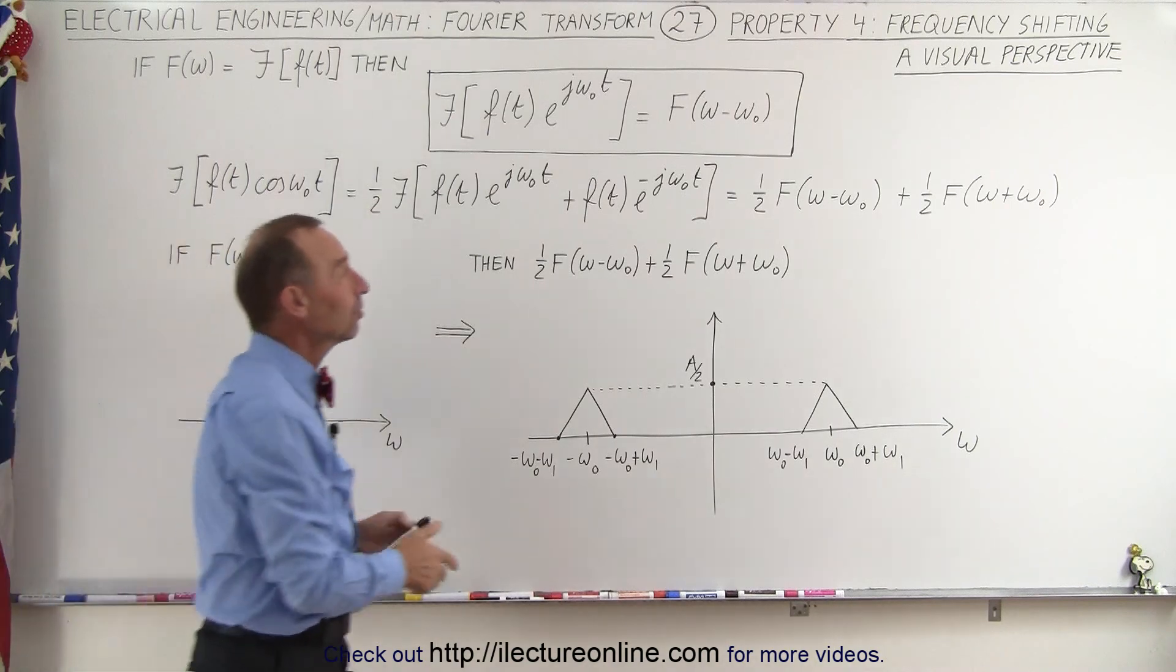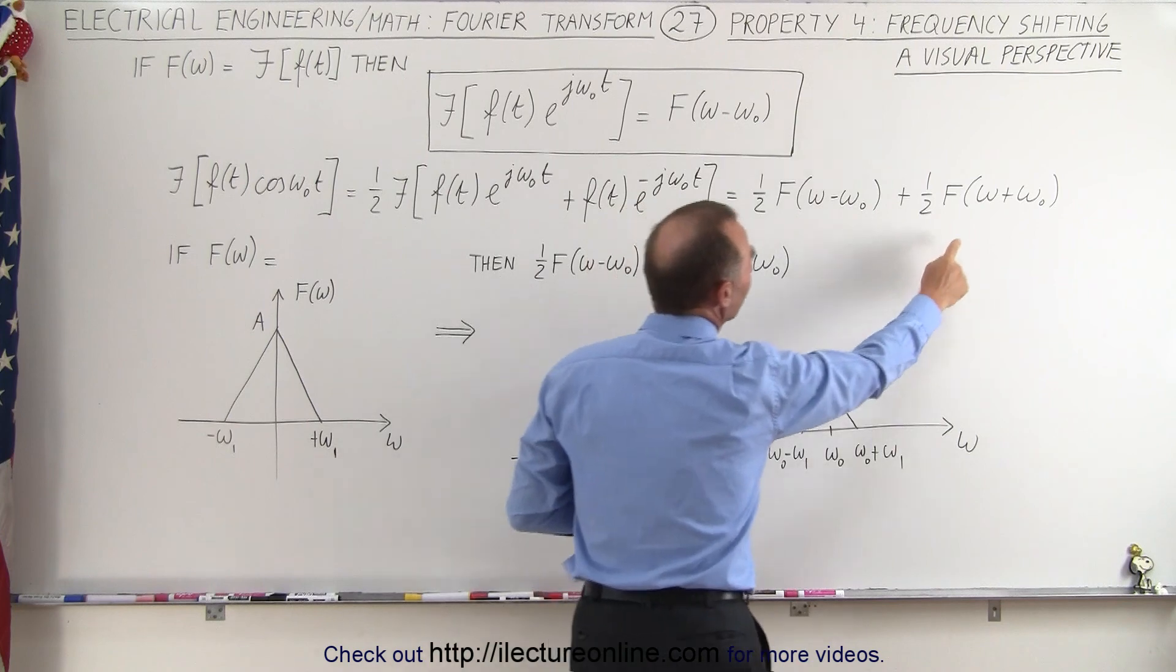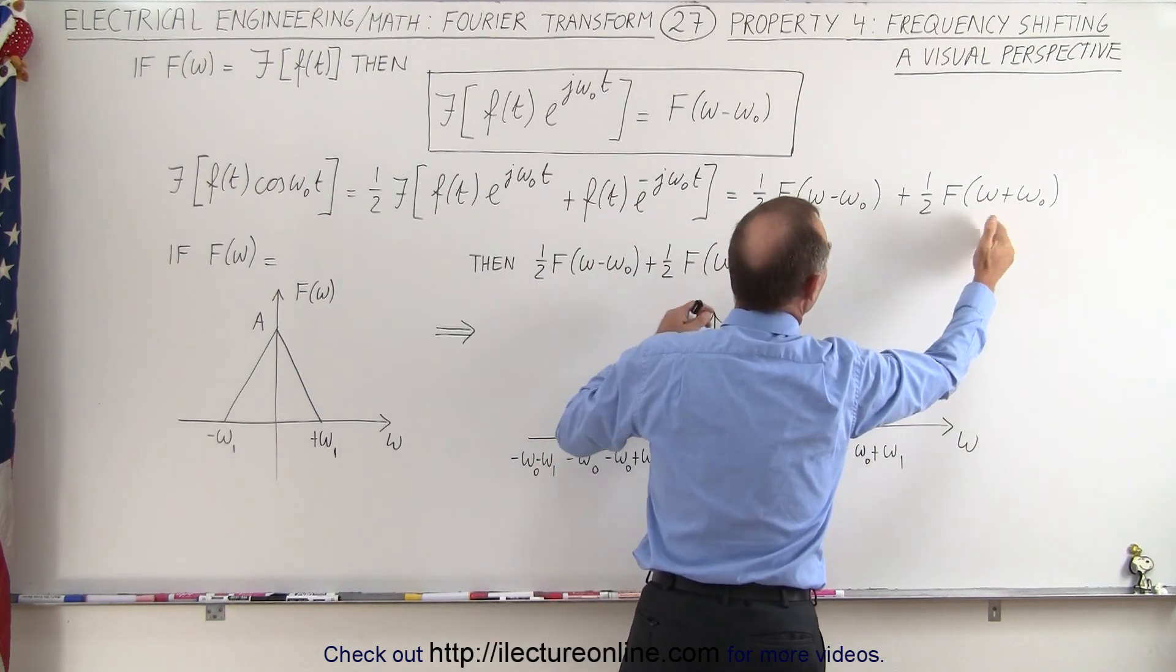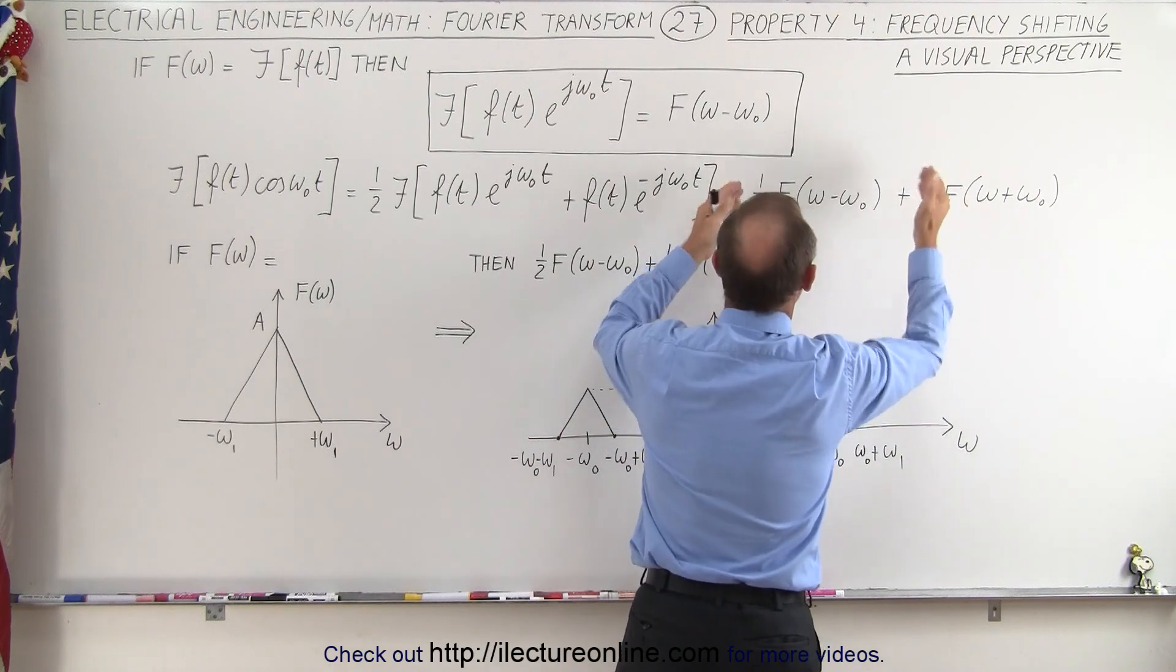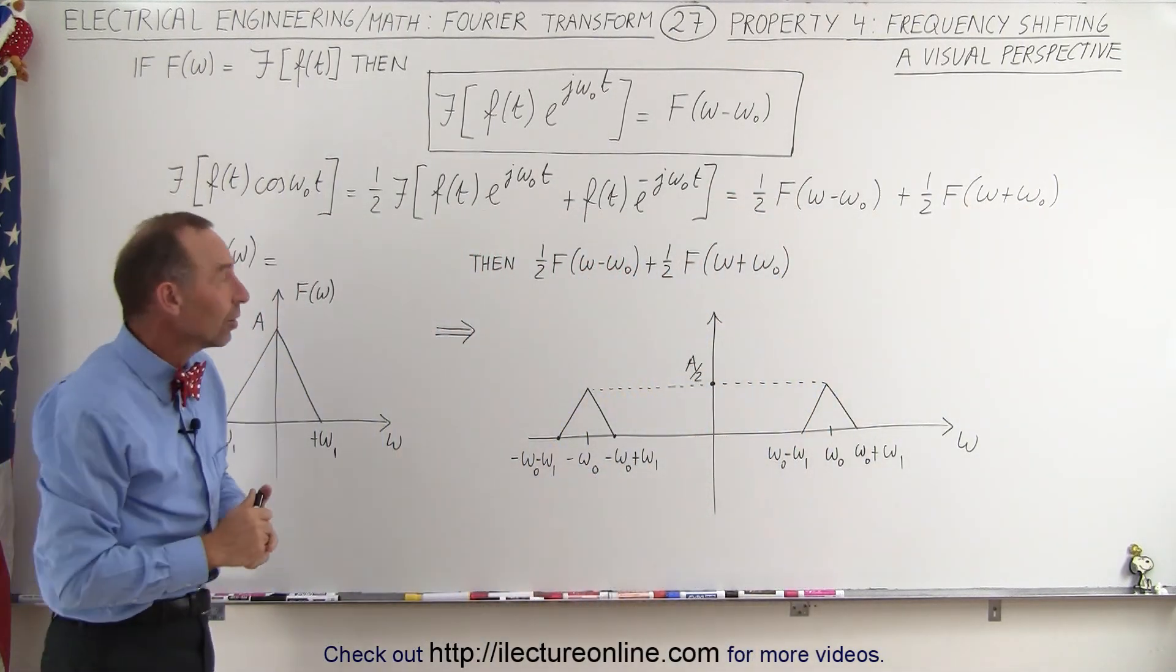And then you realize you end up with the Fourier transform shifted to the left by omega, the Fourier transform shifted to the right by omega, and of course the amplitude reduced by one half. Visually, what does that look like?